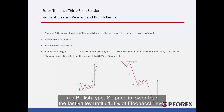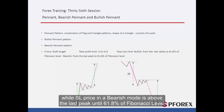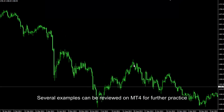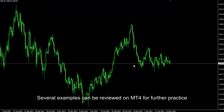In a bullish type, SL price is lower than the last valley until 61.8% of the Fibonacci level, while SL price in a bearish mode is above the last peak until 61.8% of the Fibonacci level. Several examples can be reviewed on MetaTrader 4 for further practice.